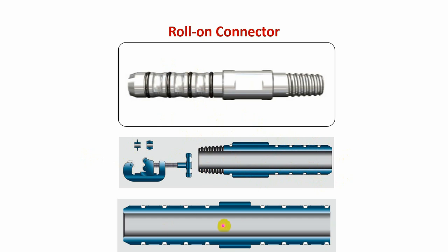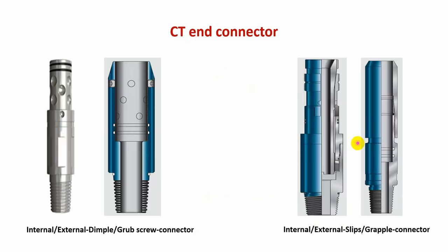This connector type is used in emergency cases — if you cut the coiltube and want to connect the broken part with a new reel. You connect the old coiltube from one end and the new coiltube reel from the other end and continue pull-out.